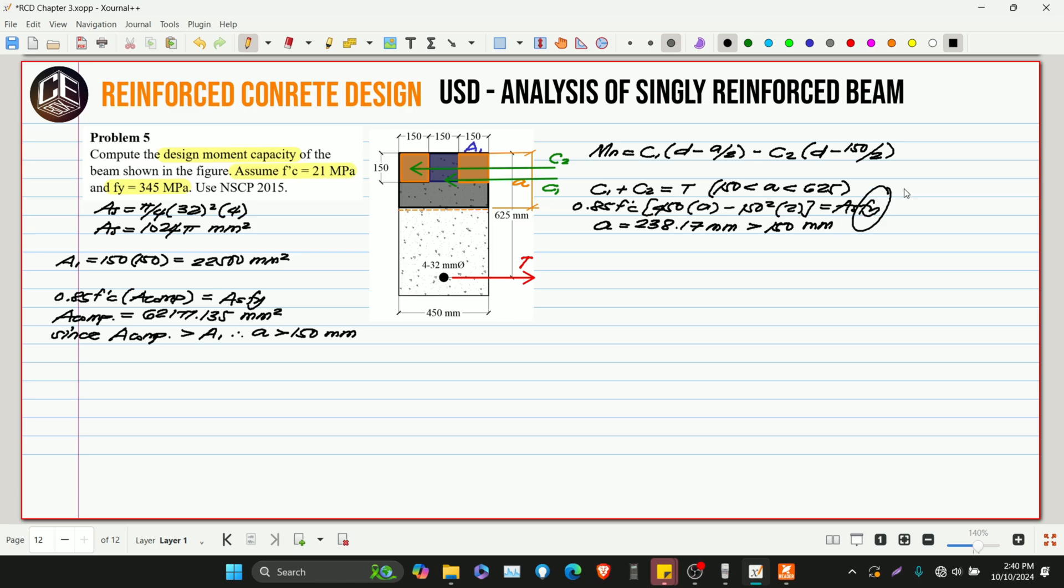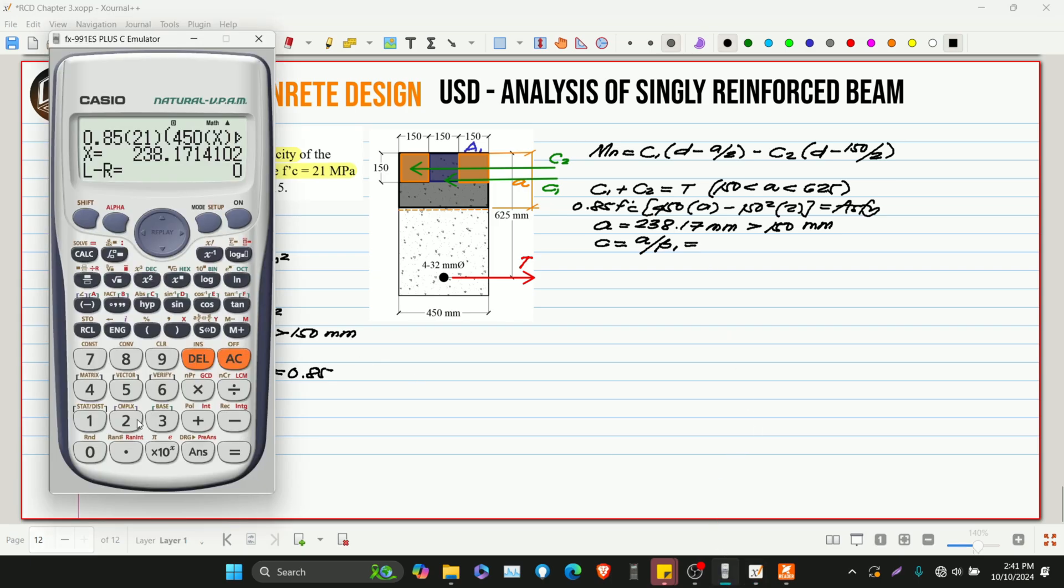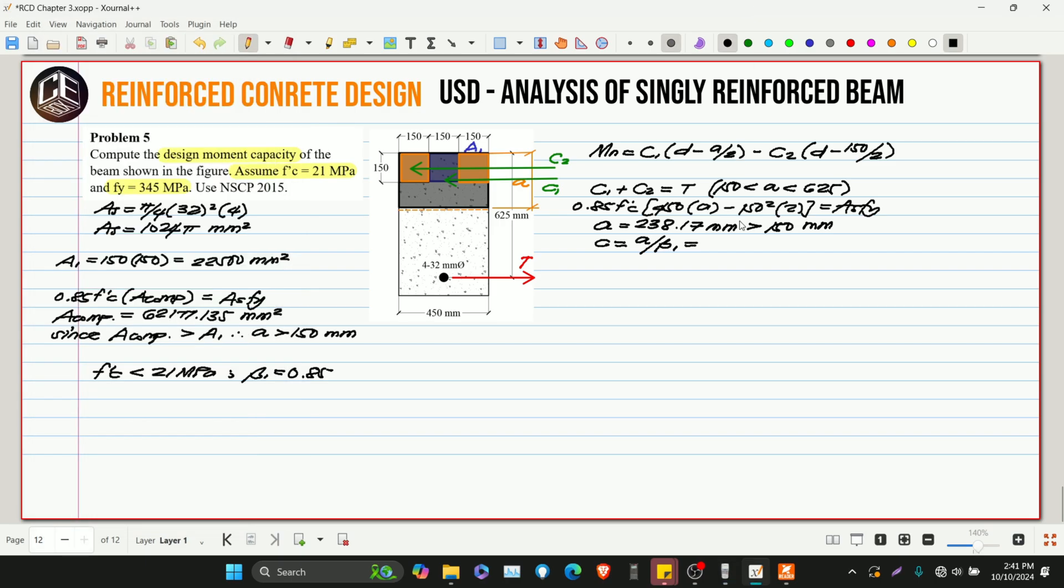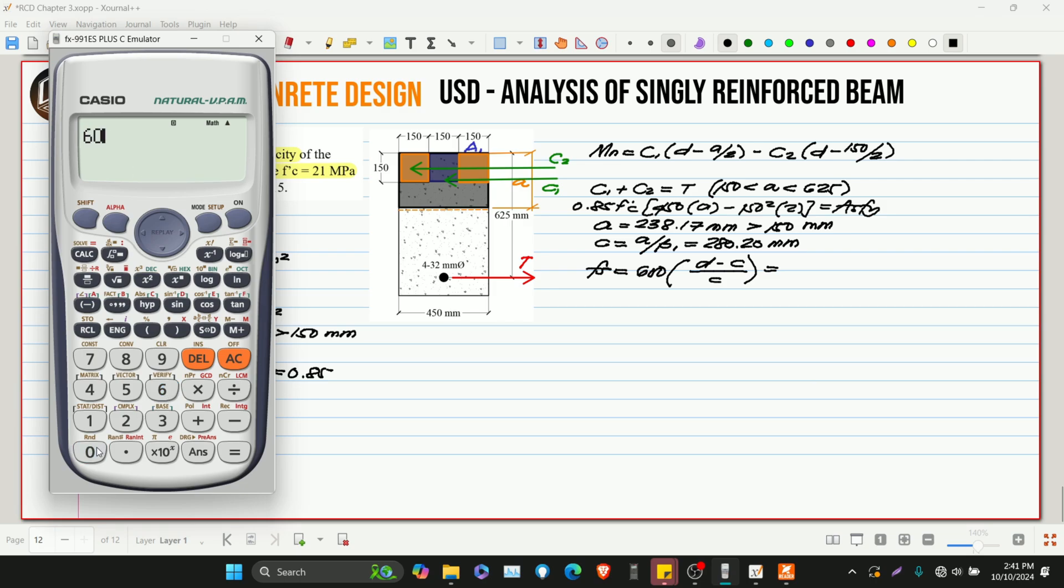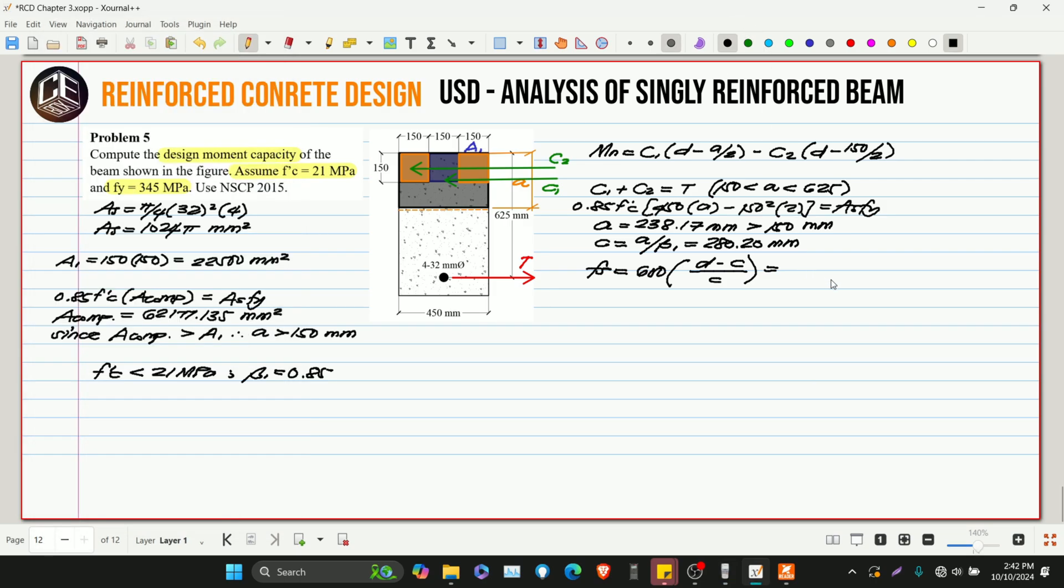What we need to prove is if the steel actually yielded. So, let's solve for C, which is equivalent to A over Beta 1. Since our F'C is less than 21 MPa, therefore, our Beta 1 is equivalent to 0.85. So, what is our C? 280.20 millimeters. And now, let's solve for F's, which is equivalent to 600 multiplied by D minus C over C. 738.33 MPa.